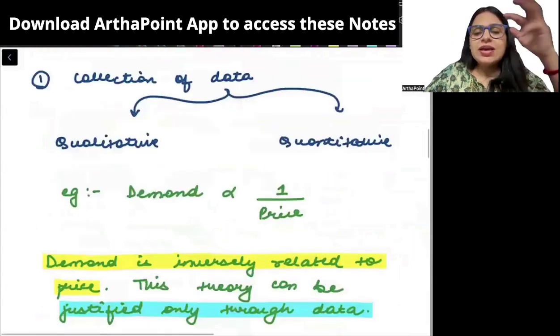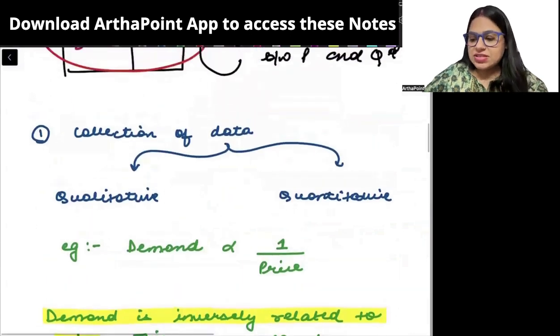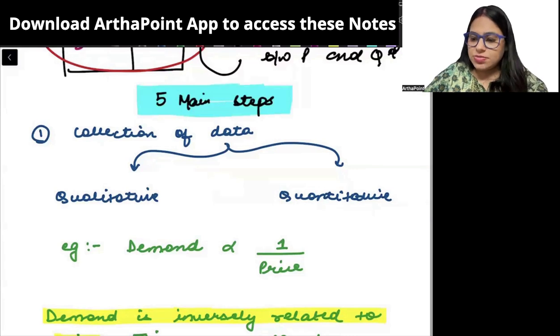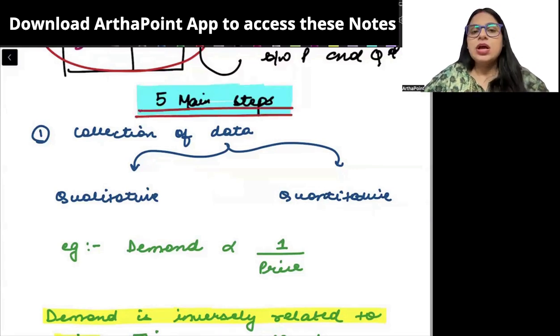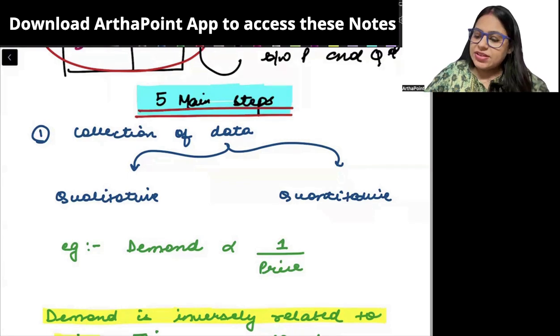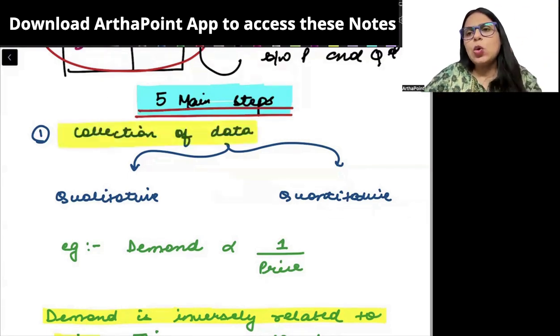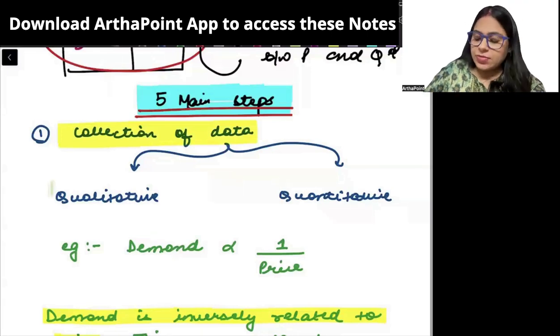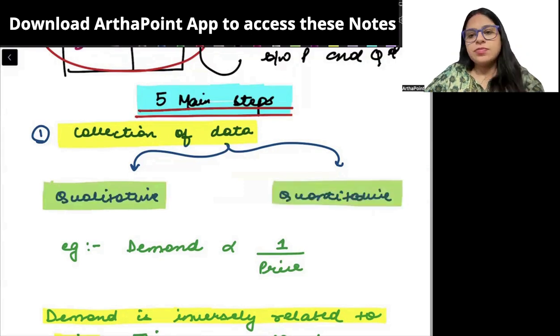Now, there are mainly five main steps involved in this empirical science. The first step is called collection of data.